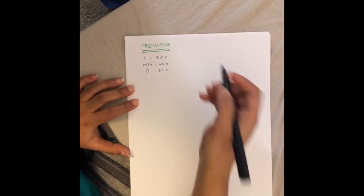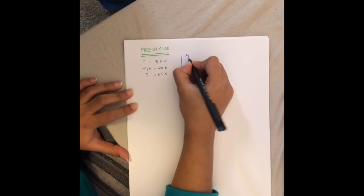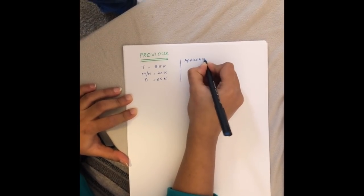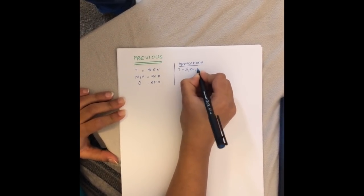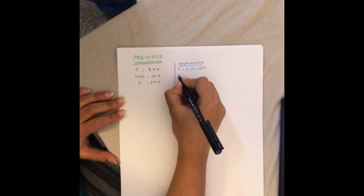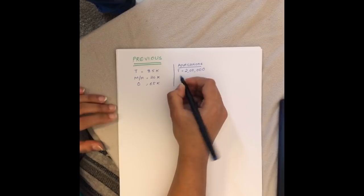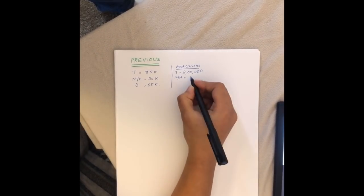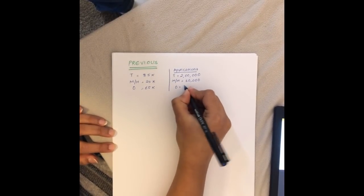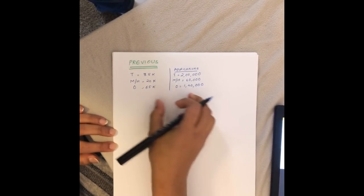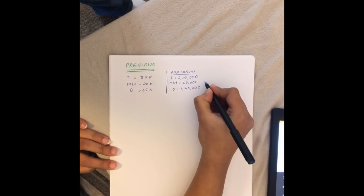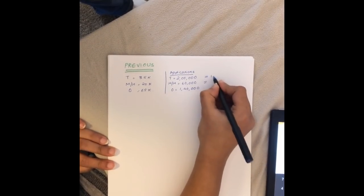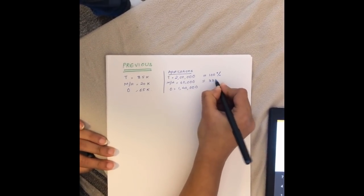Considering the previous statistics, let's see the application numbers from last year. This is a rough estimate we got off the internet. The total application number was about 2 lakh (200,000), out of which we are estimating there were about 60,000 who were masters or higher students, and the remaining 1 lakh 40,000 (140,000) were other categories.